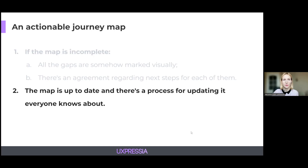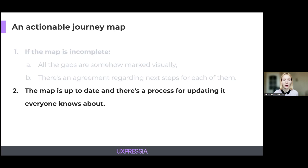Another case when your journey map can be actionable is when the map is up-to-date and there is a process for updating that everyone knows about. This doesn't mean you need to update a map every day or after any tiny change, but updating it after major changes to your product or service will definitely make sense, because it will be easier to track progress and see what's on the roadmap. Your updates might also be automated via some integrations or embeds. Now, Julia will show you how you can do that in UXpressure.